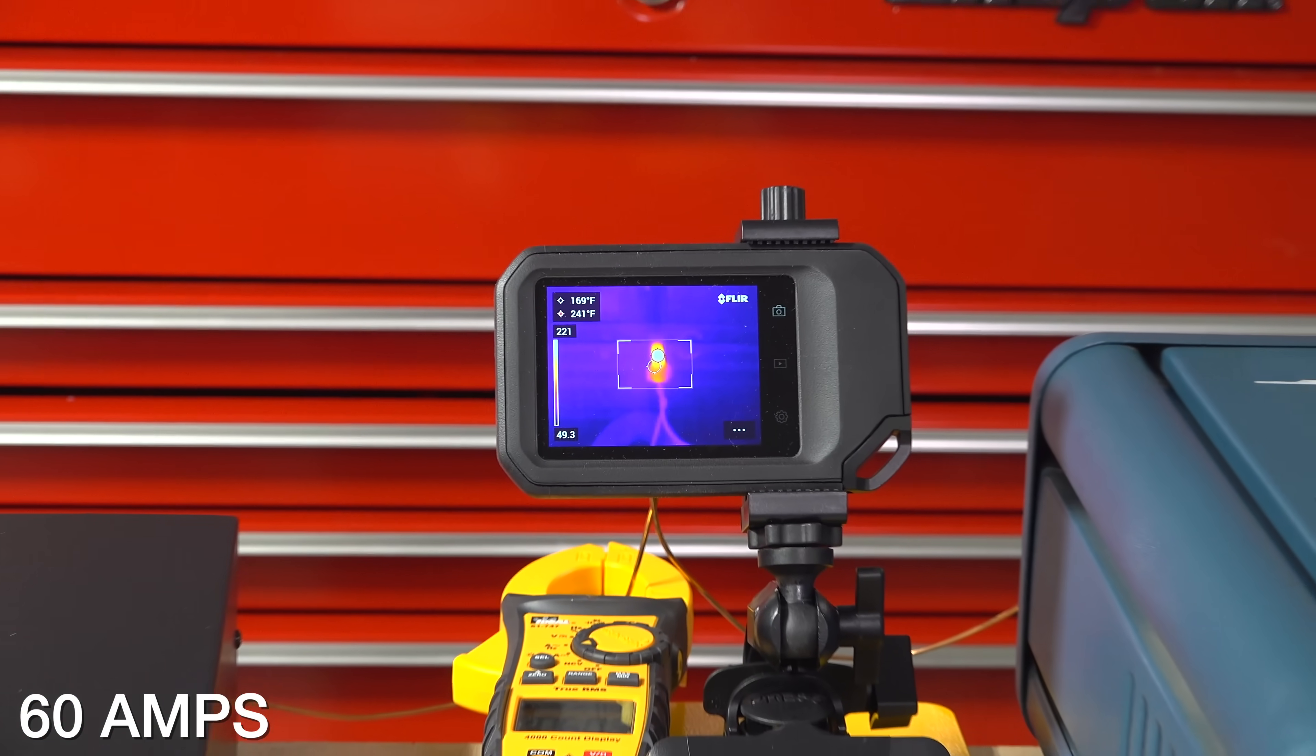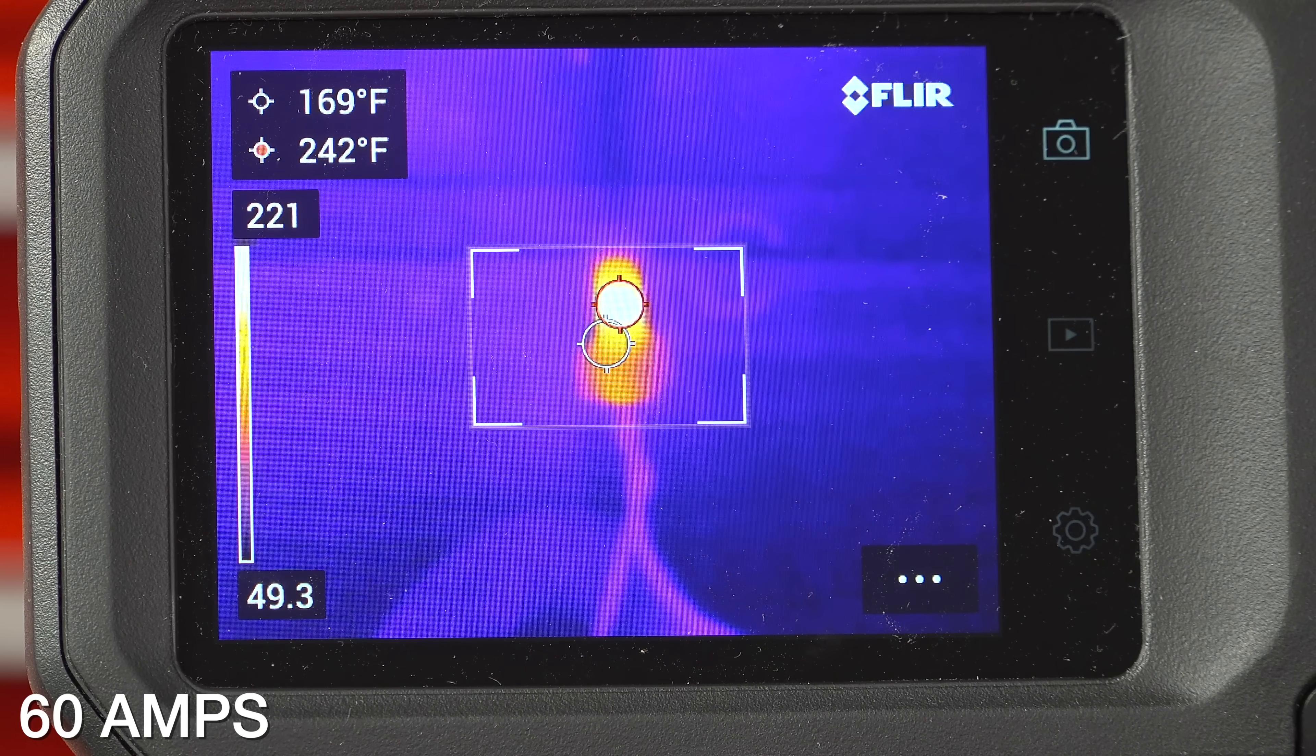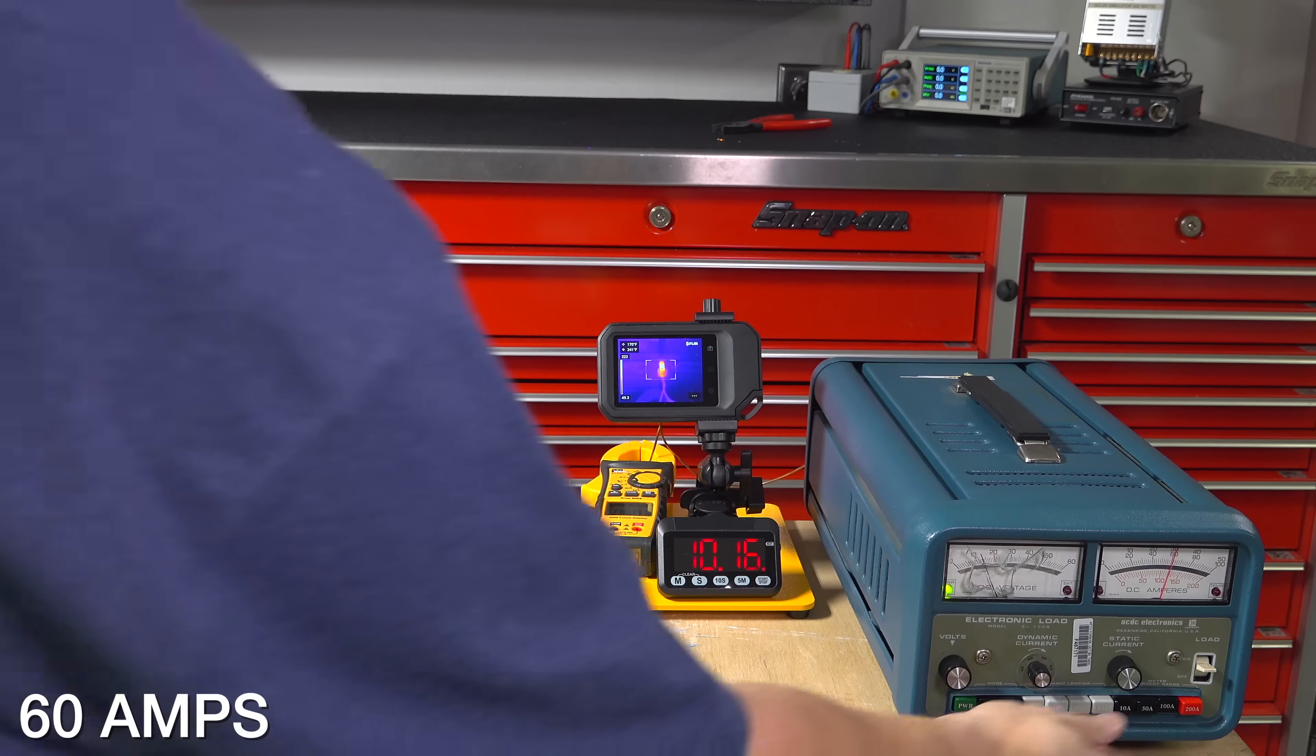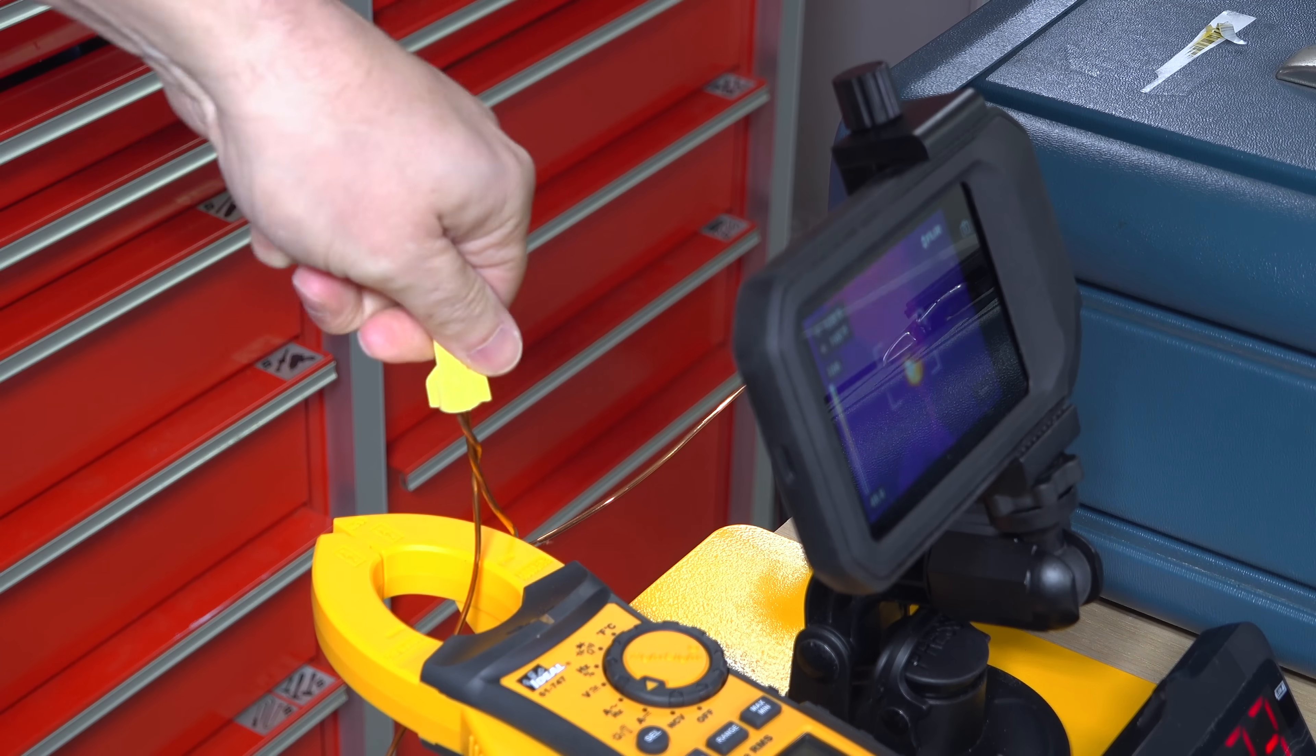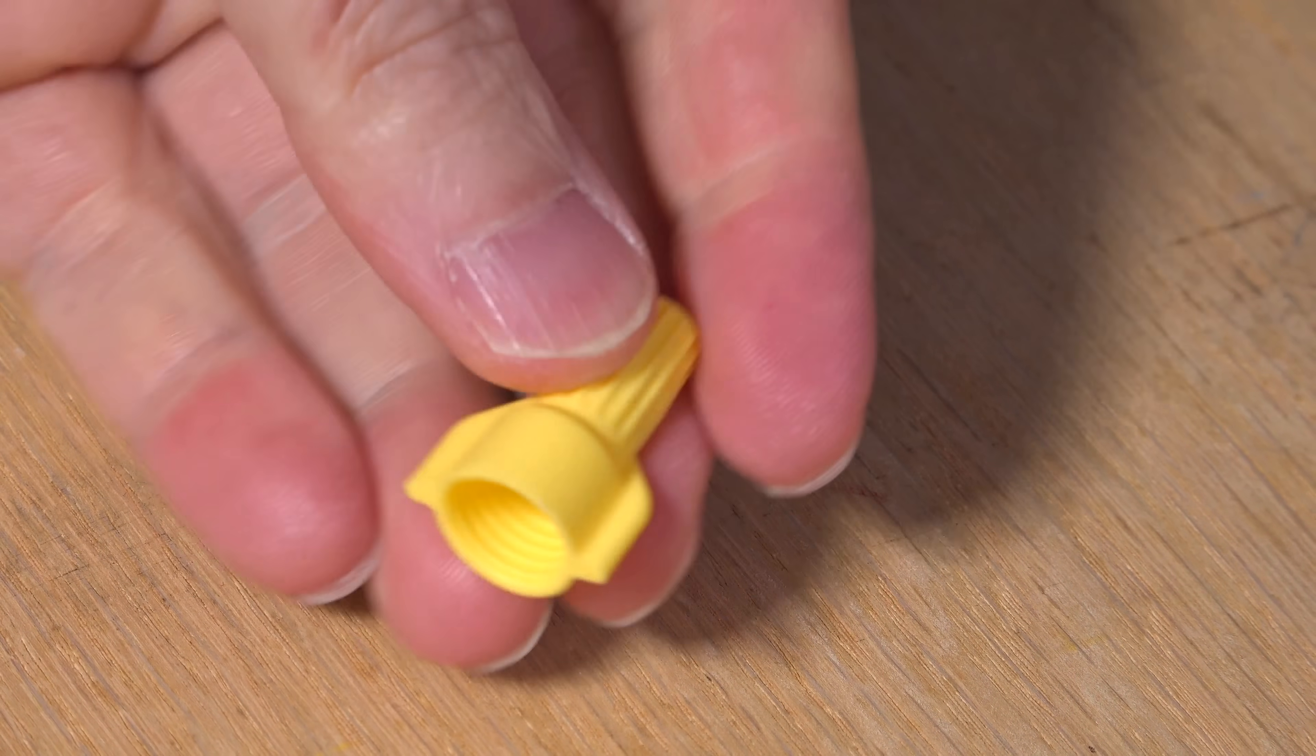Now for the moment of truth. We're hitting 10 minutes and we're running at 60 amps and our connector is at 242 degrees. Now compared to the Wego, this is definitely cooler because the Wego was running at 273 degrees. Once the wire nut cooled down, I removed it and I looked at it closely and I didn't see any problems, no melting or any other issues. Compared to the Wego, it was exactly the same.